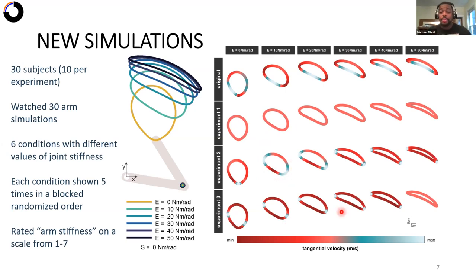In experiment three, there's no parallel relationship here. What we did was we took the time series that was computed to make a constant velocity transition around the curvature for the 50 newton meter per radian stiffness simulation, and applied that to all of the simulations as well. So there was no velocity curvature relationship in experiment three.